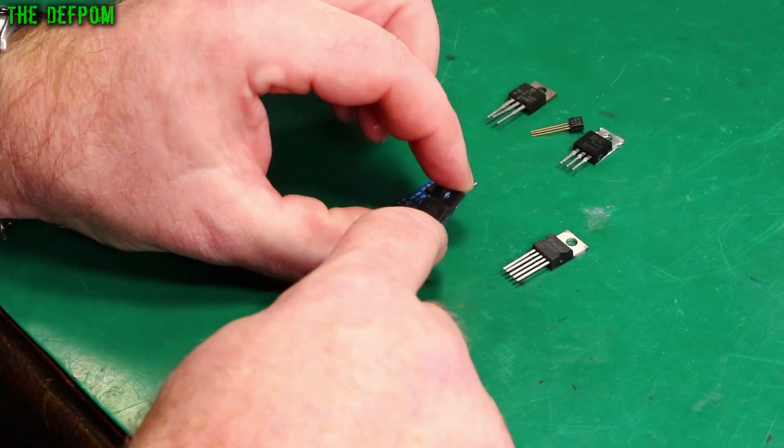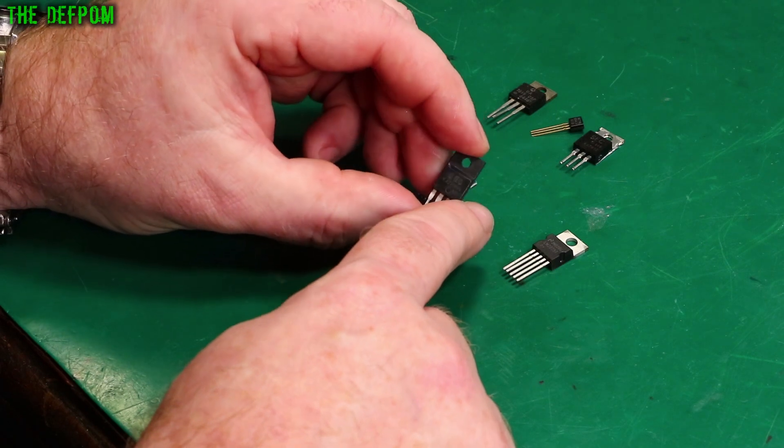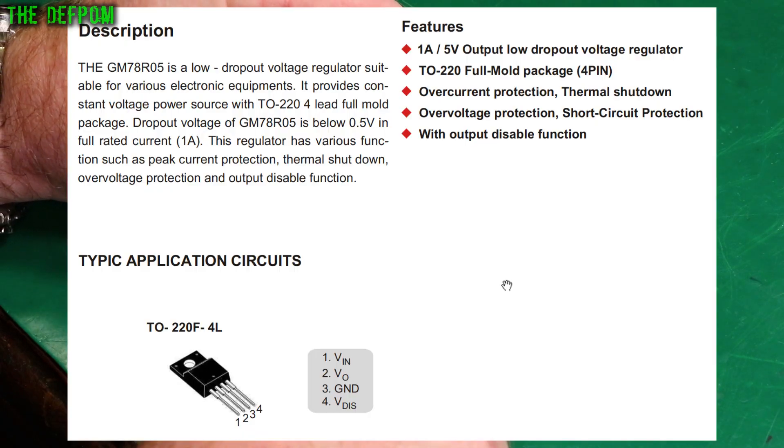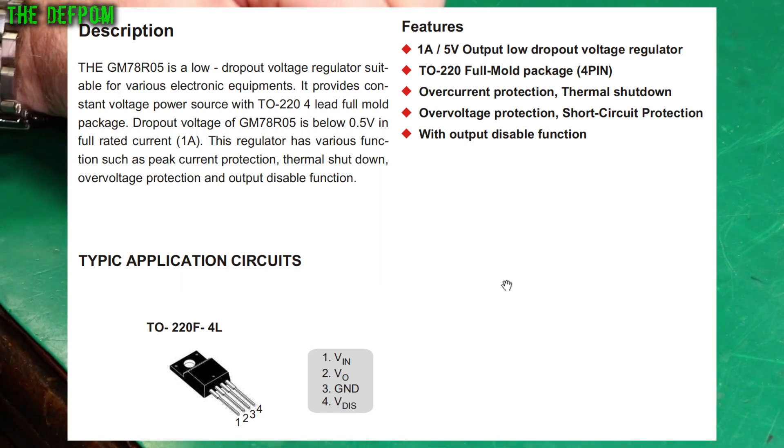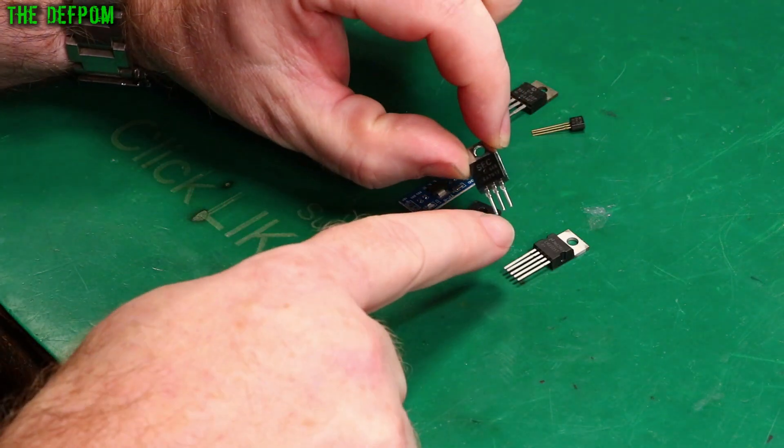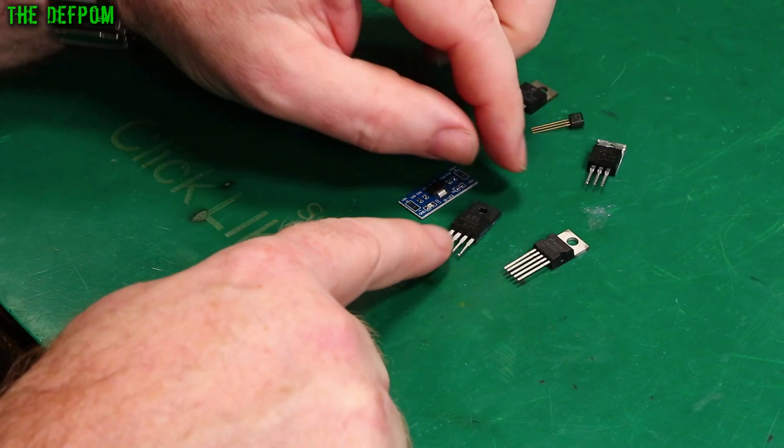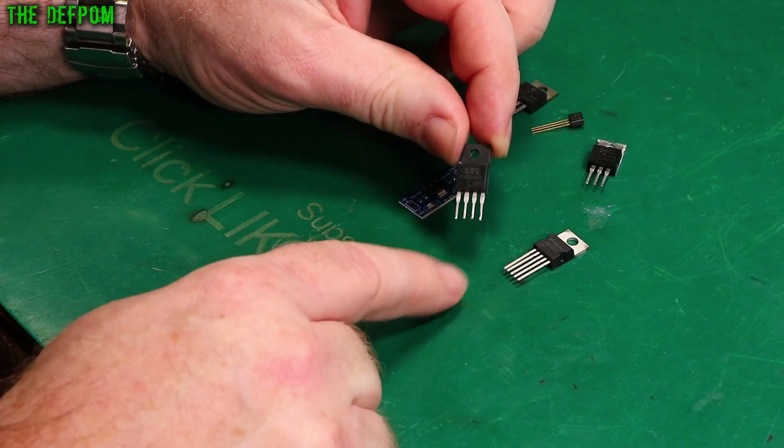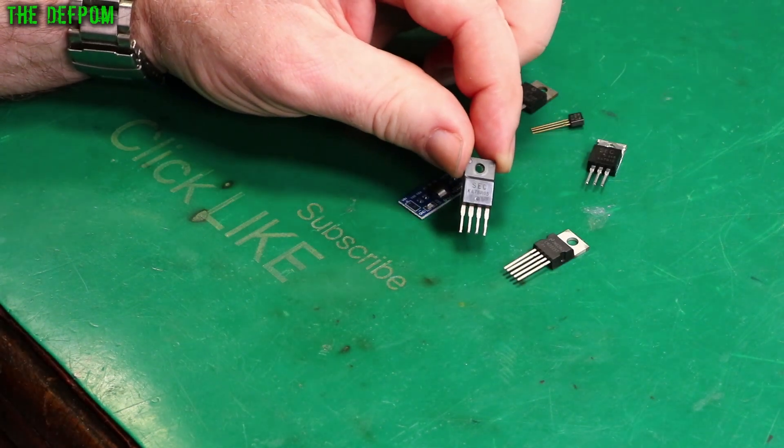I've also got this one here, it's a 78R05. This is a bit weird this one. It's got 4 pins instead of 3, very unusual. I've salvaged this from something. So what's different about this one, the extra 4th pin, is that this one actually has a disable pin. These have an in, out and a common on them. These also have a disable in addition to that. So when that disable pin is activated it actually turns off the voltage regulator which can be handy sometimes.